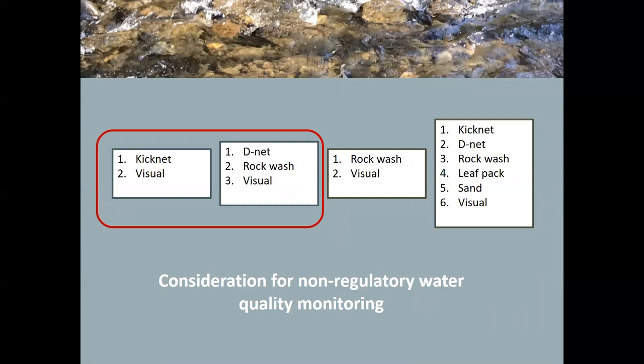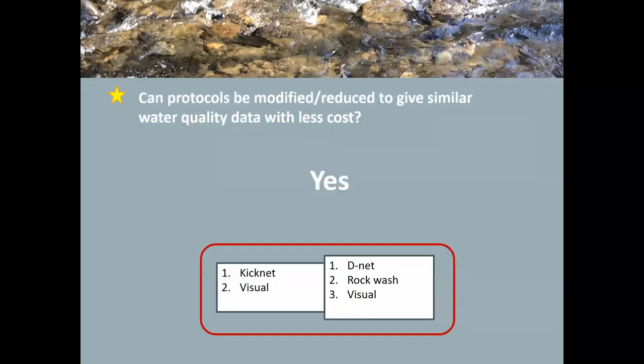So in consideration for non-regulatory water quality monitoring, and anyone else who would want to draw information from this, this does provide data to support decisions where programs are having to reduce some of those sampling methods. The first two combinations, Kicknet and visual and D-Net, rockwash and visual perform very well. And similarly to using all methods combined as far as richness and diversity. So that's encouraging. Can these protocols be modified or reduced to give similar water quality data with less costs? And the answer to that is yes.